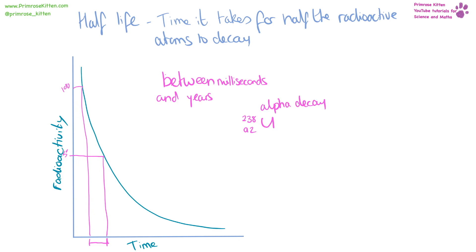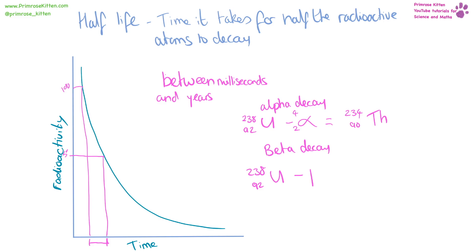The calculations for nuclear decay are simpler than they look. Here we have uranium-238 undergoing alpha decay. Alpha is 4, 2, so: 238 minus 4 gives us 234, and 92 minus 2 gives us 90. We then use the periodic table to look up what has an atomic number of 90 — giving us thorium. For beta decay, beta is 0, −1. So: 238 minus 0 gives us 238, and 92 minus (−1) gives us 93, which gives us neptunium. The atomic number is the important thing in these calculations.